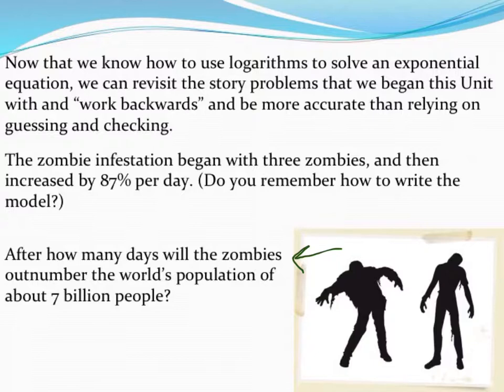So let's go ahead and revisit this problem, and now that we know about using logarithms to solve, see how we can use algebra and logarithms to find our solution. So in this case, let's see if we can remember how to write this model. We started with three zombies, if I remember correctly, and of course I do, hopefully you do too, or you're checking your notes. This was the model that we used for exponential growth. The A stood for our initial number of zombies, so that was three.